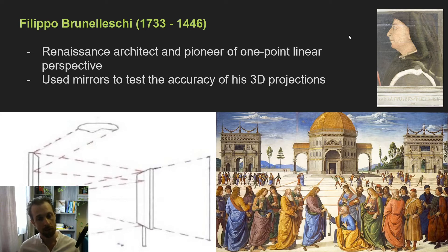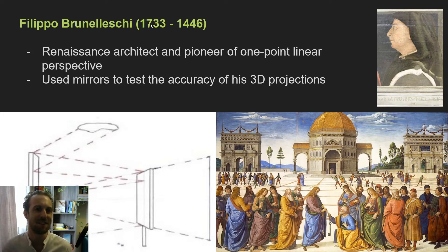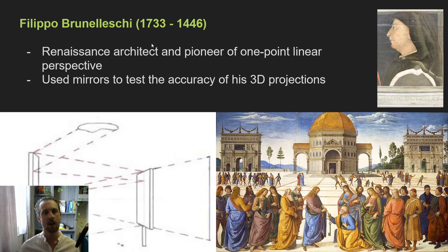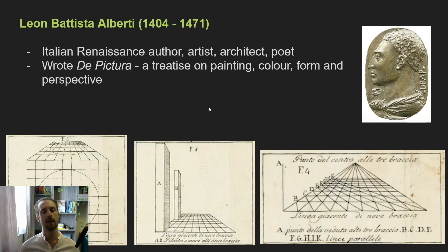So where did this development come from? There are quite a large number of people who contributed to the formal development of linear perspective. Filippo Brunelleschi, the Italian Renaissance architect — note there's a typo, that should say 1333 rather than 1733 — was one of the early pioneers of linear perspective. He used mirrors in his drawing to transfer what he was seeing onto a two-dimensional plane.